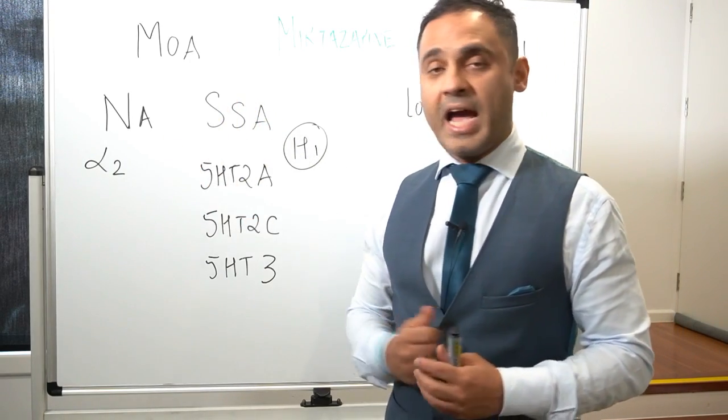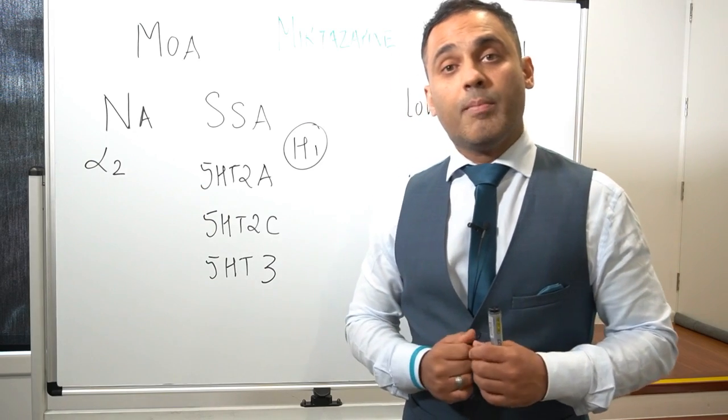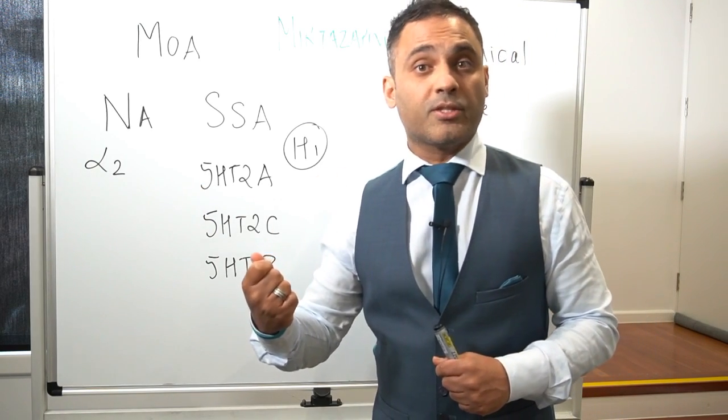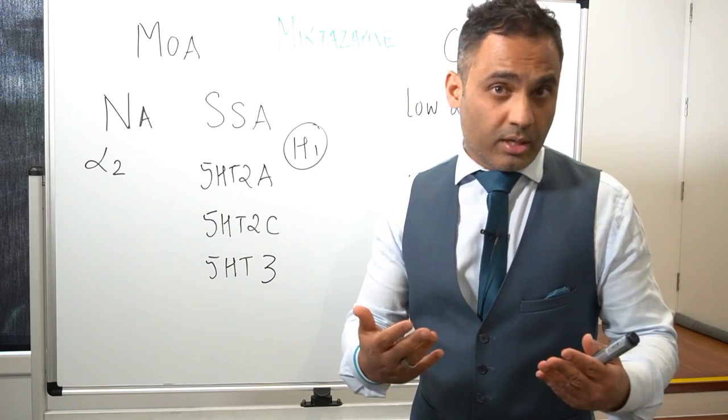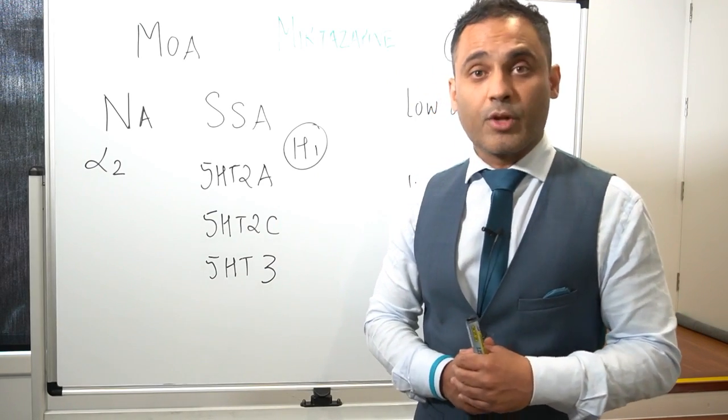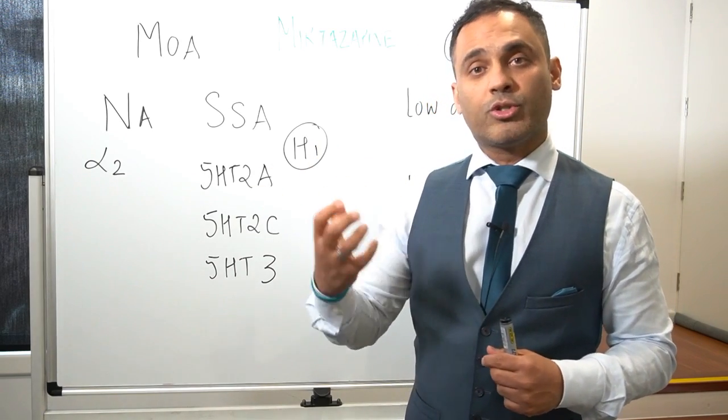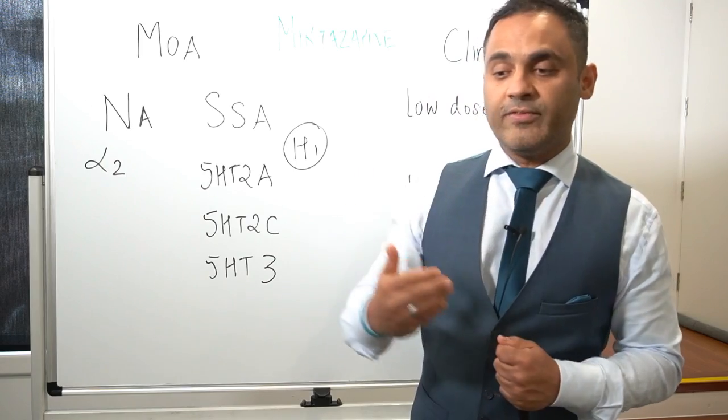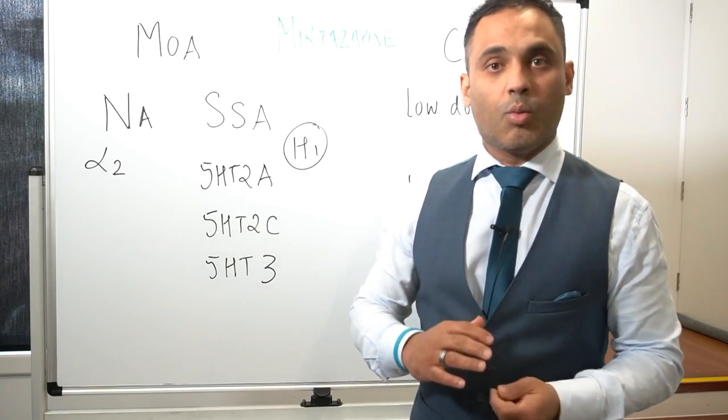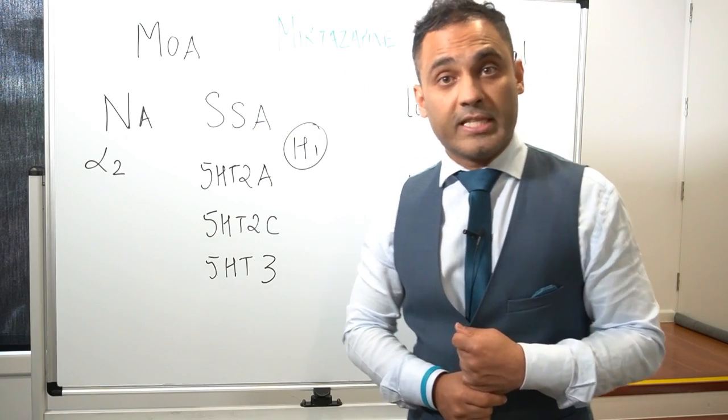It also has a noradrenergic component, and that occurs through alpha-2 presynaptic antagonism. Presynaptic receptors are important aspects covered in the SSRI video on this channel. So alpha-2 adrenergic receptors, when they're autoreceptors, essentially when you activate an autoreceptor, it acts as a brake. When you antagonize it, you lift the brake and the neurotransmitter's released.